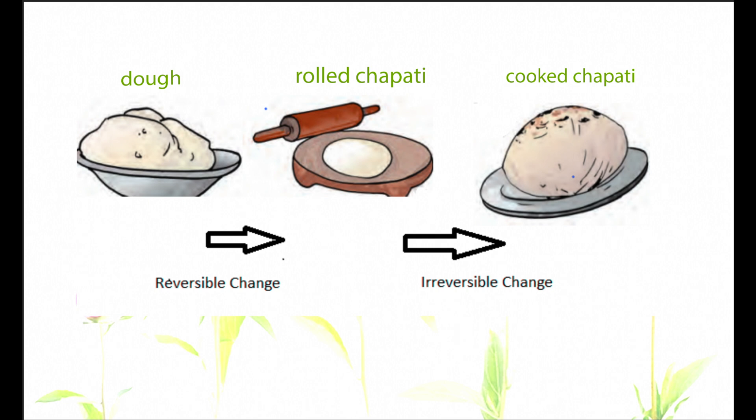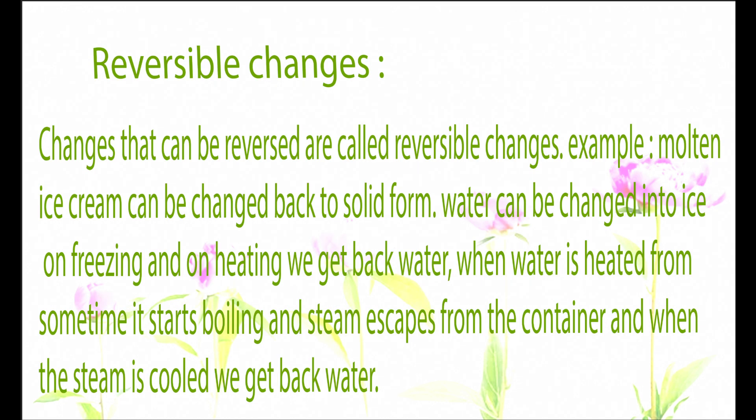Changes that can be reversed are called reversible changes. For example, molten ice cream can be changed back into solid form. Water can be changed into ice on freezing, and on heating we can get back water. When water is heated it starts boiling, steam escapes from the container, and when that steam is cooled down we get back water.